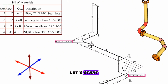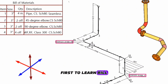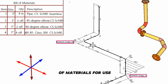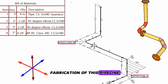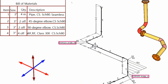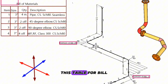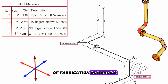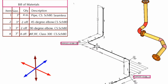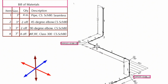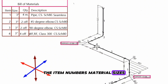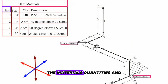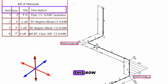Let's start by learning the bill of materials for the fabrication of this pipeline. This table shows the bill of fabrication materials. The item numbers, material sizes, quantities, and material descriptions are shown in each row.